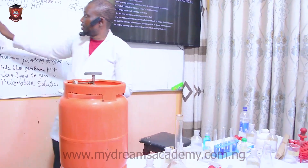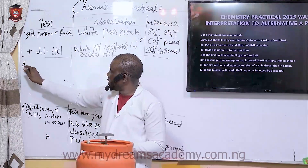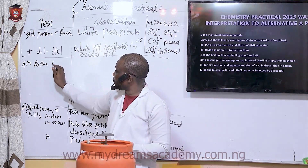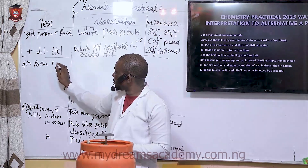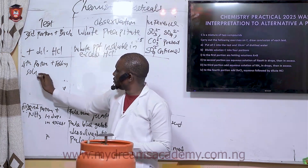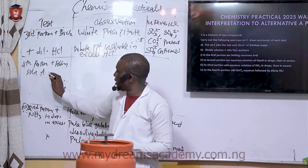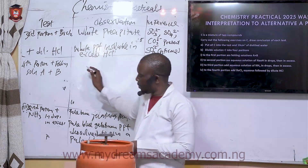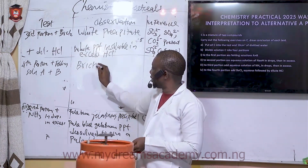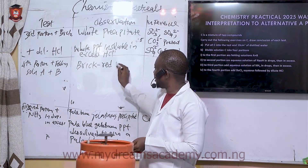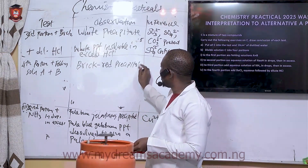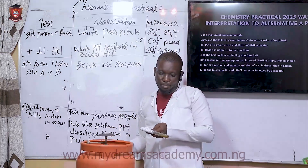Look at the interpretation here. Fourth portion plus Fehling's solution A plus Fehling's solution B gives a brick red precipitate. Any sample that gives a brick red precipitate with Fehling's solution is a typical reducing sugar.